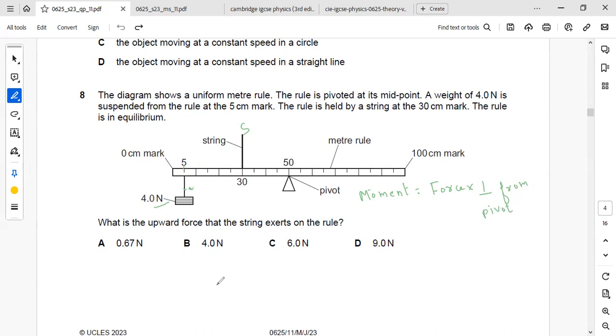Here, clockwise moments will be equal to the force, that is 4 Newton, into the perpendicular distance from the pivot. That means this distance from 5 to 50, that is 45 centimeter.